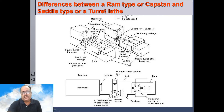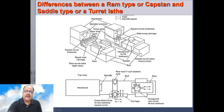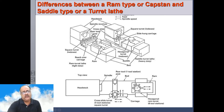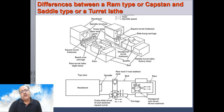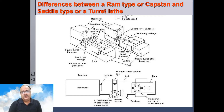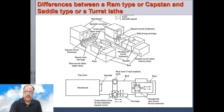In a saddle type turret lathe, typically there is only a side hand carriage on one side, whereas in a capstan lathe there is normally a carriage on both sides of the bed, allowing more tools to be held. The advantage of the saddle type is that the diameter of the workpiece that can be held is greater. Saddle type turret lathes are bigger in size and much more accurate compared to capstan lathes. These are the main differences between ram type and saddle type turret lathes.